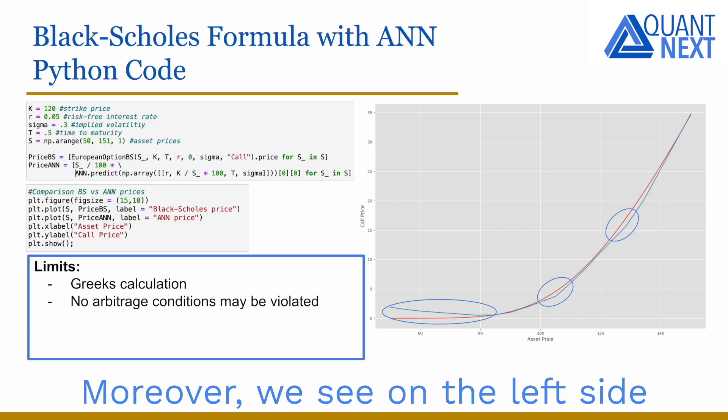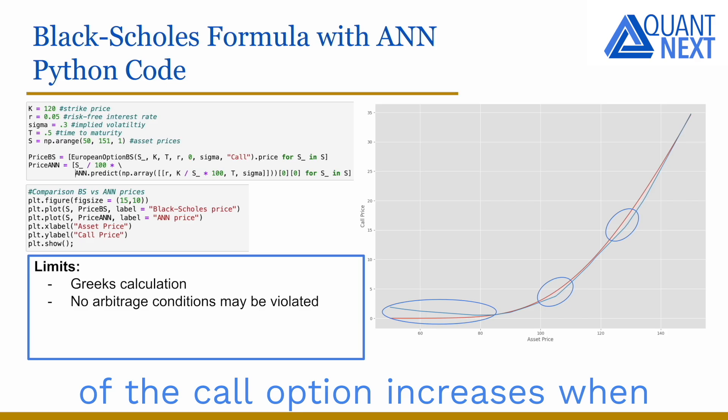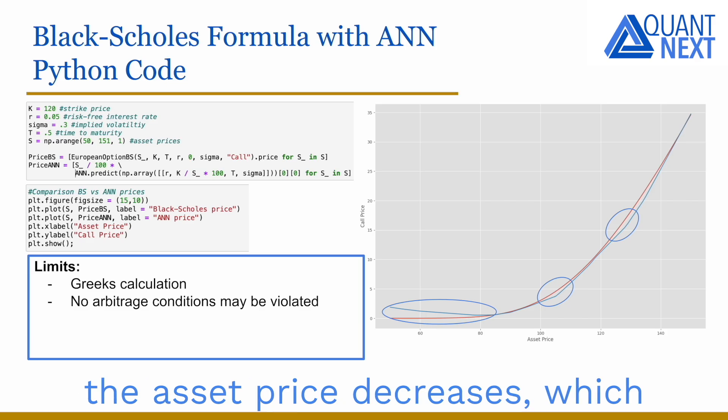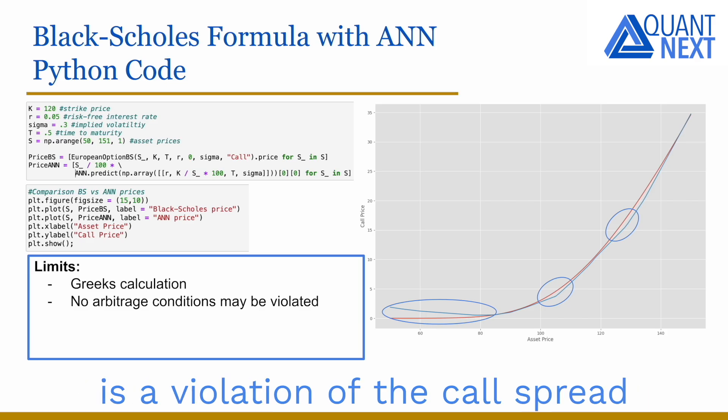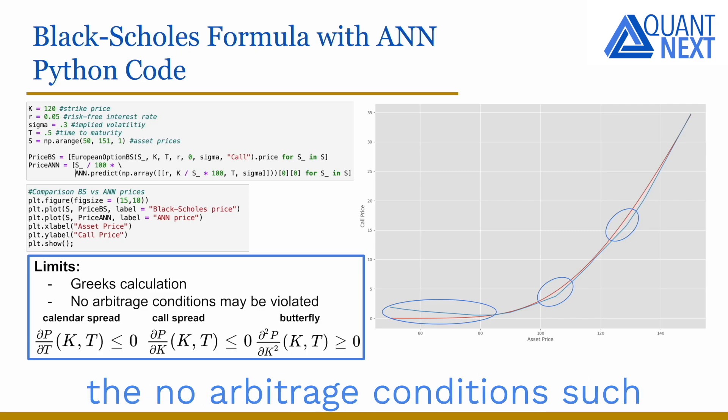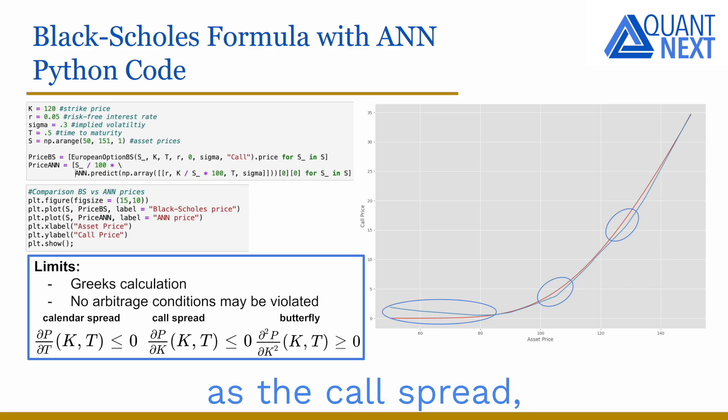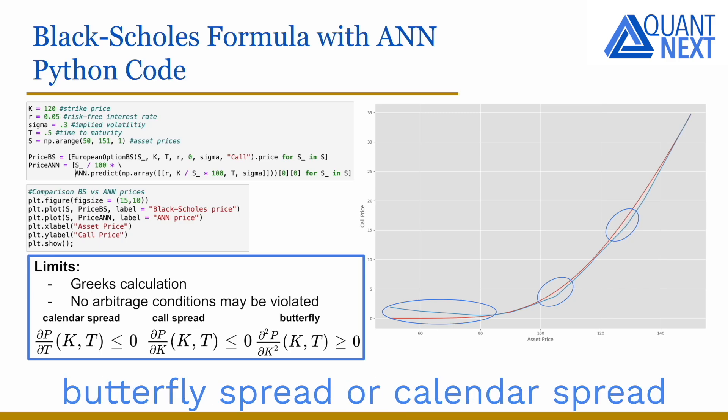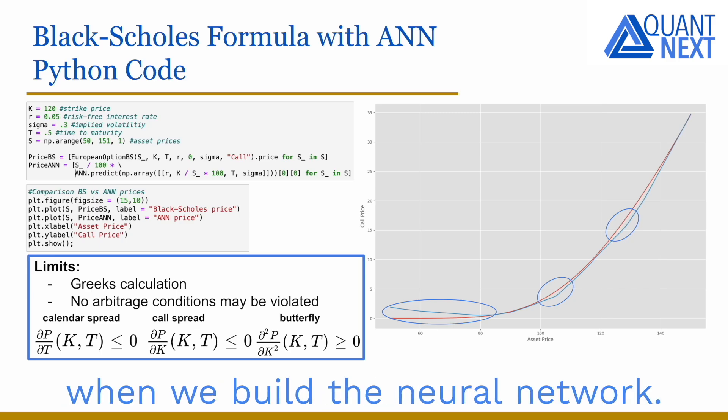Moreover, we see on the left side of the chart that the model price of the call option increases when the asset price decreases, which is a violation of the call spread arbitrage condition. Indeed, nothing guarantees that the no-arbitrage conditions, such as the call spread, butterfly spread, or calendar spread, are not violated when we build the neural network. So it may be required to use additional regularization techniques or constraints.